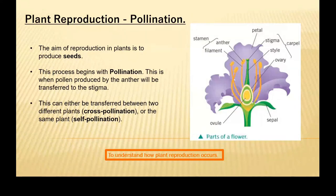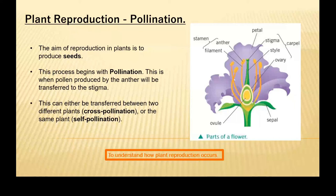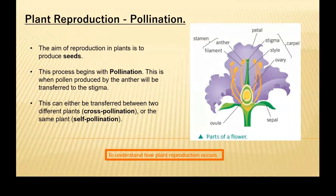Now, the aim of reproduction in plants is to produce seeds. You've probably seen seeds, maybe about on the floor, maybe you've even kicked plants and the seeds have gone everywhere. This process will begin with something called pollination. This is when pollen produced by the anther will be transferred to the stigma — we want pollen to land on the stigma, which is our sticky surface.